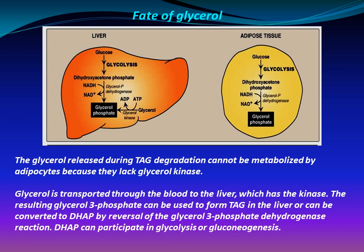Fate of glycerol: the glycerol released during triacylglycerol degradation cannot be metabolized by adipocytes because they lack glycerol kinase. Glycerol is transported through the blood to the liver, which has the kinase. The resulting glycerol-3-phosphate can be used to form triacylglycerol in the liver, or can be converted to dihydroxyacetone phosphate by reversal of the glycerol-3-phosphate dehydrogenase reaction. Dihydroxyacetone phosphate can participate in glycolysis or gluconeogenesis. In adipose tissue, glycolysis supplies the glycerol-3-phosphate for triacylglycerol synthesis.